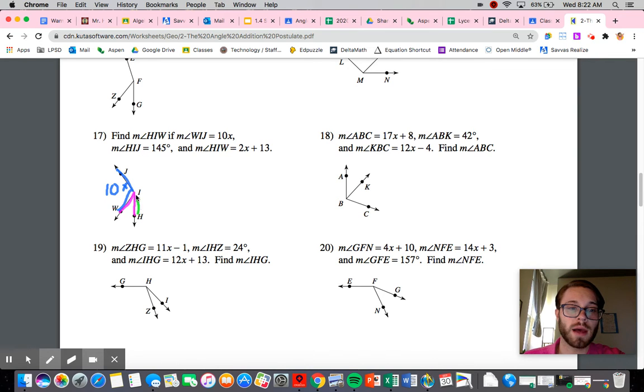Now HIJ is the entire angle here, right? It's the entire thing. We know the whole thing is 145 degrees. So we know this entire angle is 145. And we know that this component over here is 10x.